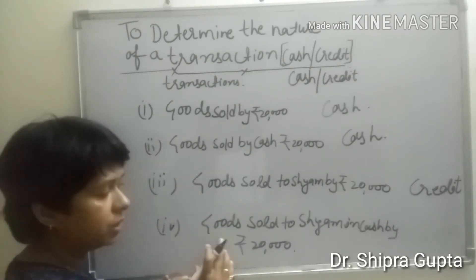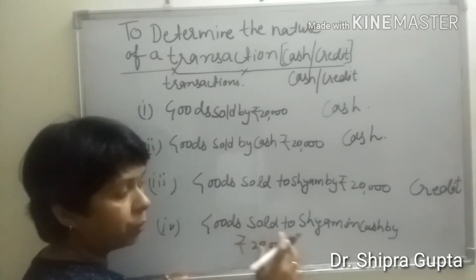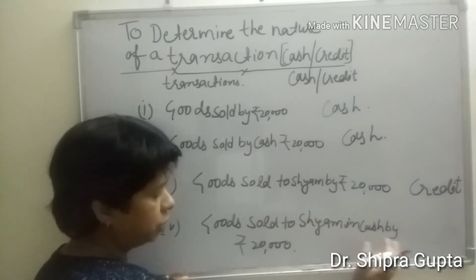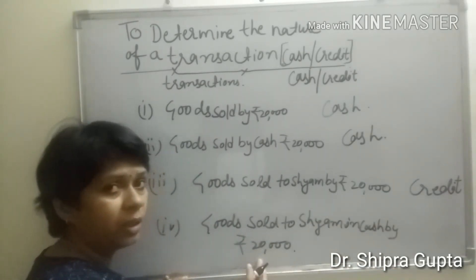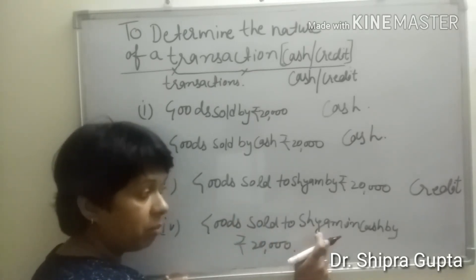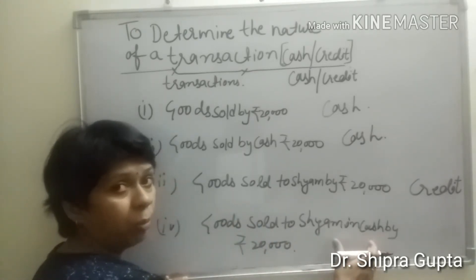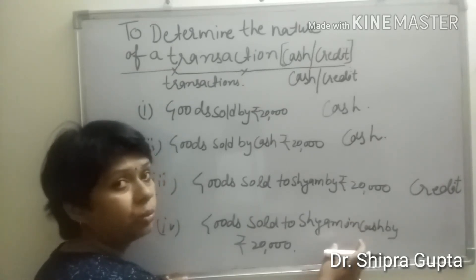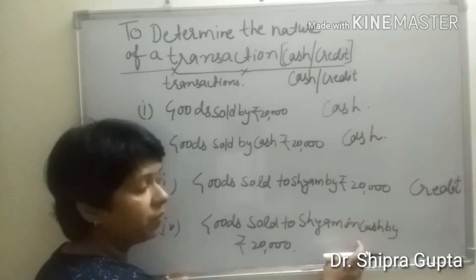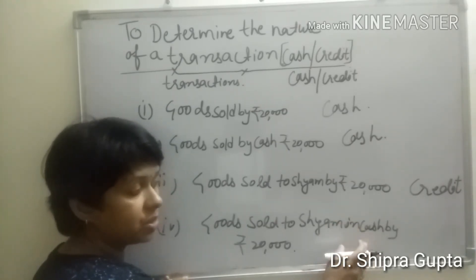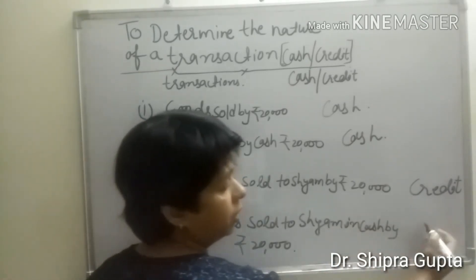In the last transaction, goods sold to Shiam in cash by rupees 20,000. In this transaction, both a person's name and cash are given, but first priority goes to cash. So we have taken that this transaction will be held by cash.